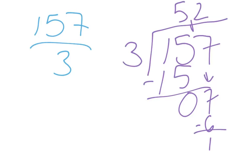What you are saying here is that you can make 52 groups of three, and it will almost get you to 157. You would have 52 full groups of three, and then you'd have one little piece left over.